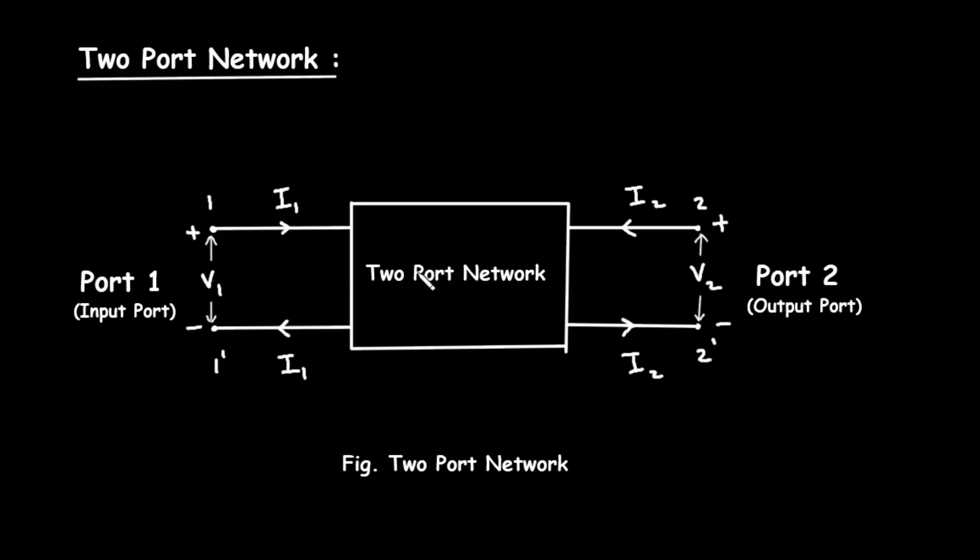Why is it called 2 port network? A port is a pair of 2 terminals, 2 wires we can say, where current enters and exits. The 2 port network has 2 ports, port number 1 and port number 2, one for input and one for output.